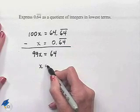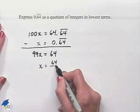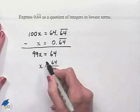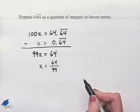And now x is going to equal 64 divided by 99, as we divide both sides of the equation by 99.